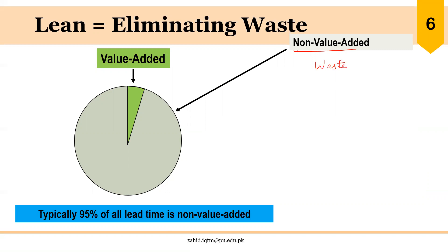We focus more on muda when talking about non-value-adding activities, but mura — unevenness or an unbalanced system or process — and muri — excessive overburden, or activities requiring excessive effort — are also non-value-adding in the long run. Mura and muri do produce some muda or waste over time. VSM helps us identify not only muda, but also mura and muri.